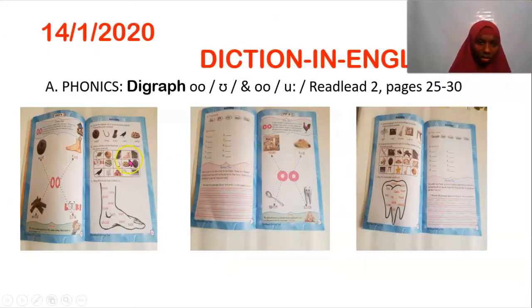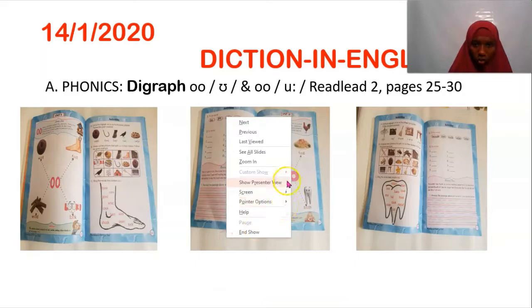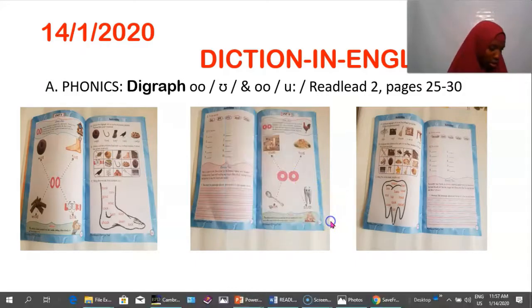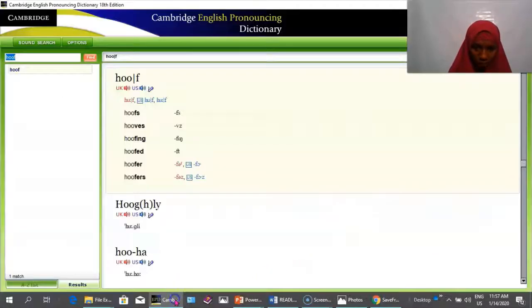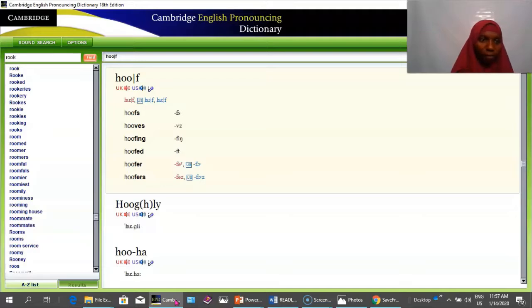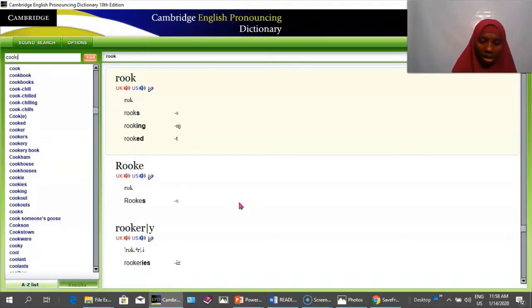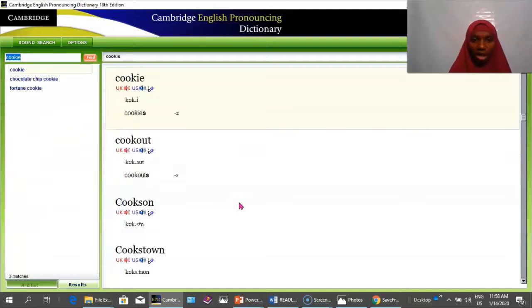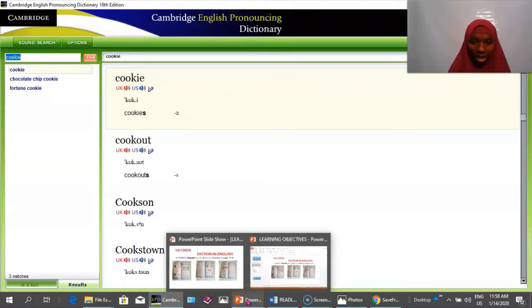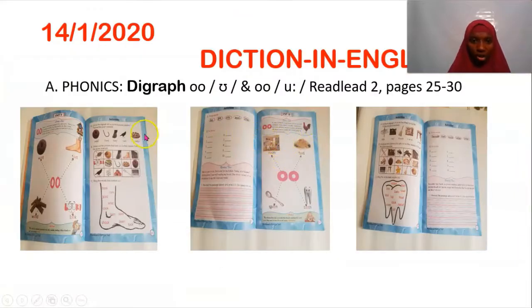After hoof, we have 'rook' — R-O-O-K. I say with confidence it's 'rook' and not 'rook.' Then the last word example is 'cookie,' not 'cookies.' So the full list is: wool, hook, hoof, rook, and cookie.